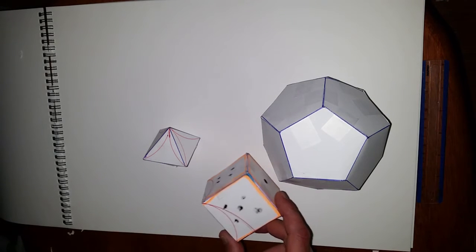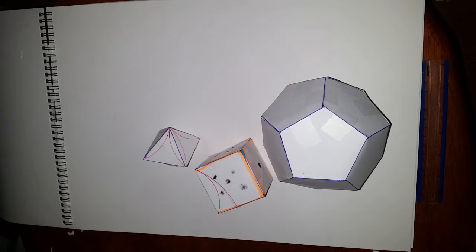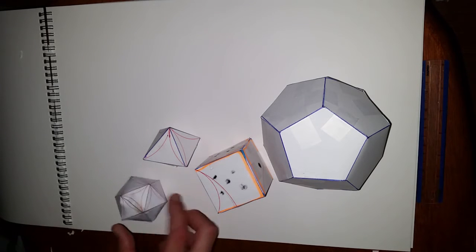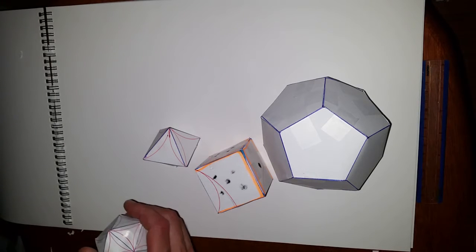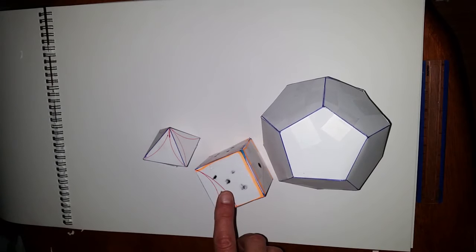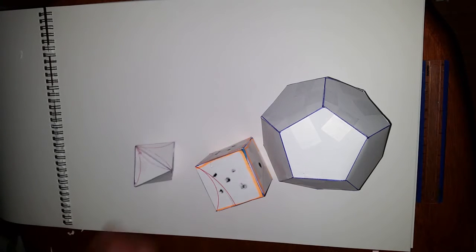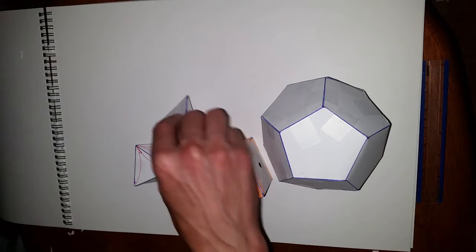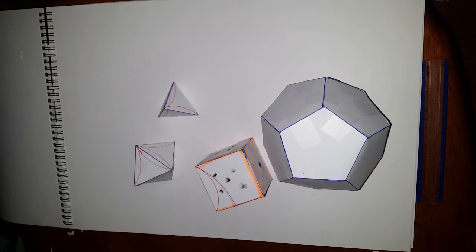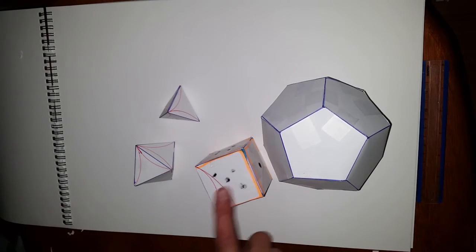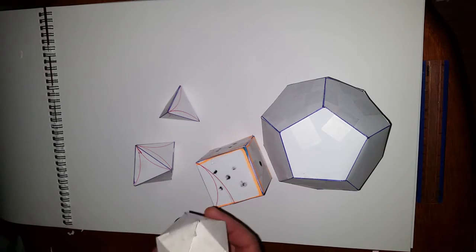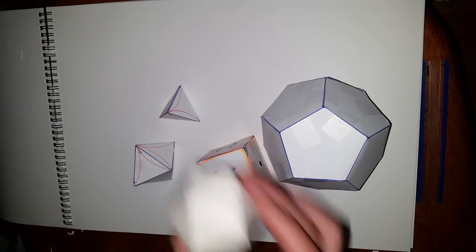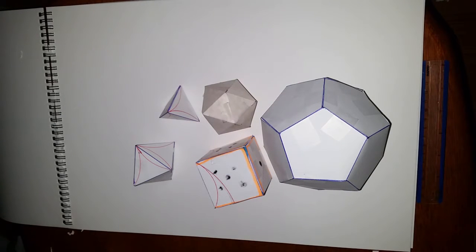We also have the icosahedron, 3600 degrees, represents water. So we have heaven, earth, the octahedron is air, tetrahedron 720 degrees, 72 years per degree precession, this is fire. Heaven, earth, air, fire, and the icosahedron, 20 sides, represents water, 3600 degrees.